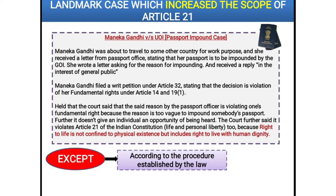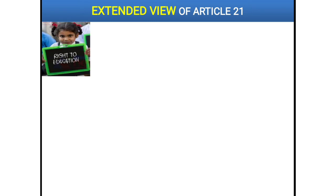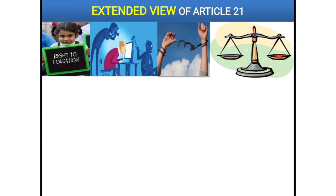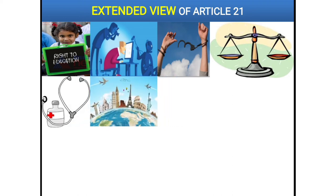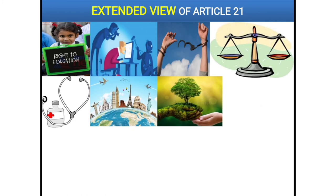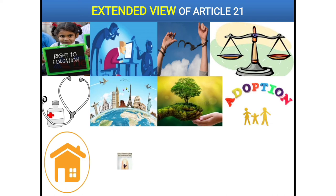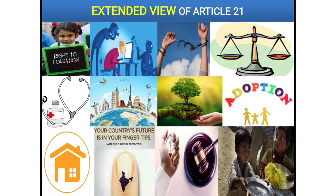Now let's understand the extended dimensions of Article 21, which the Supreme Court has interpreted and pronounced on a case-to-case basis. The scope of Article 21 is very wide. Article 21 includes: right to education, right to privacy, right to livelihood, right to free legal aid, right to travel and go abroad, right to a safe and clean environment, right to adopt children, right to shelter, right to vote, right to speedy trial, and right to food. The Supreme Court can include many more rights in Article 21 on a case-to-case basis.